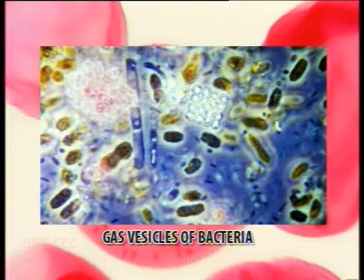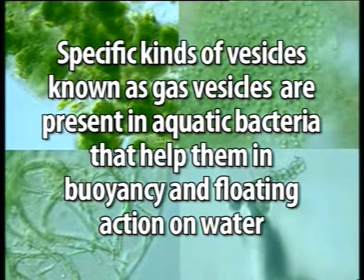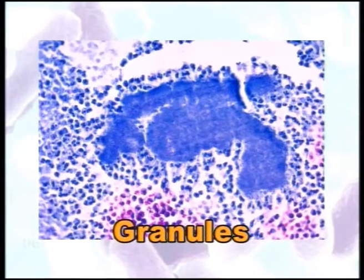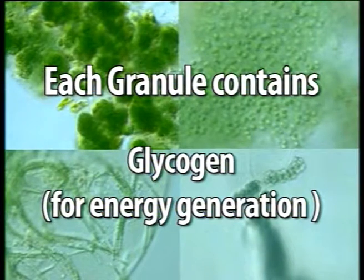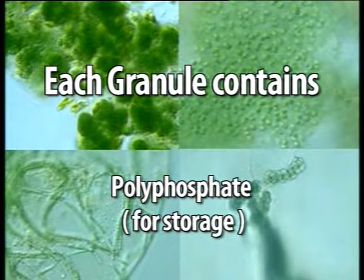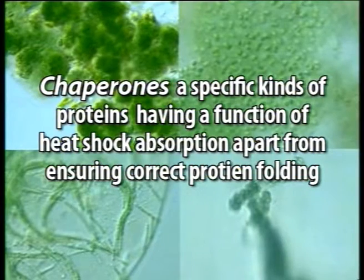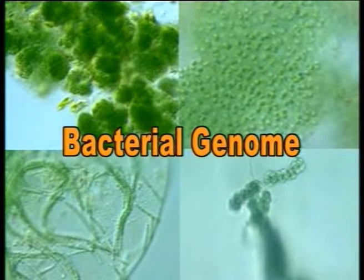Inclusion bodies refer to a variety of small bodies including granules and vesicles. Gas vesicles are present especially in aquatic bacteria, helping them maintain buoyancy. Granules contain densely packed substances that do not dissolve in cytoplasm — for example glycogen granules and polyphosphate granules for storage, and polyhydroxybutyrate (PHB) granules for carbon storage. In addition, the bacterial cytoplasm contains specific proteins called chaperones or heat shock proteins.